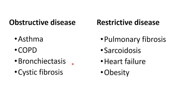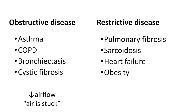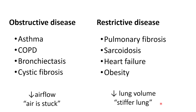In obstructive disease, the pathology is decreased airflow into the lungs. The air is stuck and not able to reach the terminal bronchioles and alveoli. In restrictive disease, however, we have decreased lung volume, which results in a stiffer lung.